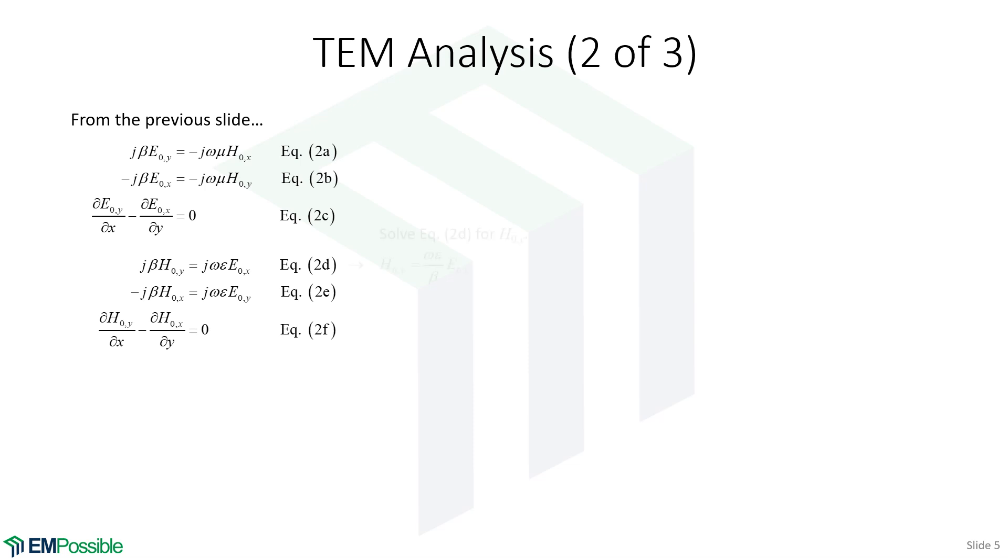Now what we'll do, first thing, is we will solve equation 2D for HY. We will take that expression for H₀Y and we will plug that into equation 2B. So we're replacing this H₀Y with this expression for E₀X. Now we have a single equation just in terms of E₀X, and we can simplify that down to this expression. And of course, we can cancel E₀X from both sides. We have beta squared equals K squared. But long story short, this shows that for TEM modes, when we're analyzing TEM modes, our phase constant beta is equal to the wave number K. So they are the same thing for TEM analysis.